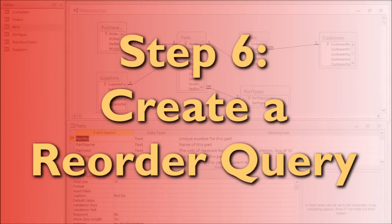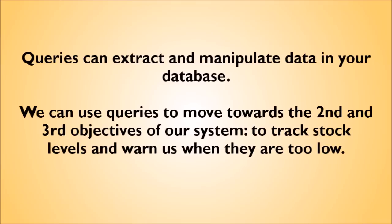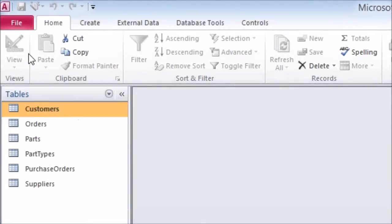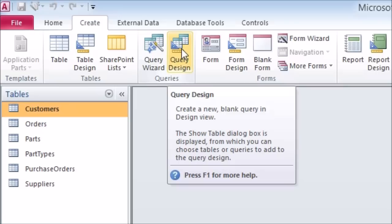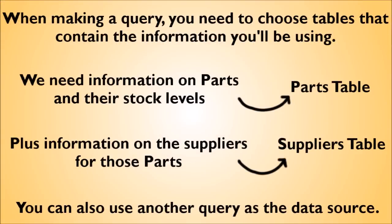Step six: create a reorder query. In general, queries are used to extract data and information from your database. In our example, we want to know whether we have less than the minimum stock level for any parts, so that we know when we need to reorder more. You can extract all sorts of other information with queries too — for example, all the parts supplied by a particular supplier, or how often a particular customer ordered last year. Often you will extract the information using a query and then use an Access report to present the data clearly. So now let's go through how to set up a query to show which parts are below their minimum stock level and tell us the suppliers from whom they should be reordered.